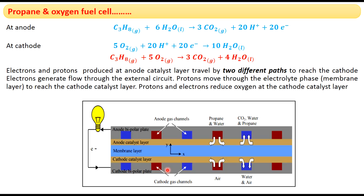Both the 20 protons and 20 electrons reach the cathode via different paths. At the cathode, reduction occurs: 5O₂ + 20H⁺ + 20e⁻ → 10H₂O. Air passed through the cathode inlet provides oxygen; 10 water molecules are produced. Unreactive air and water are removed through the blue-colored outlet of the cathode bipolar plate.